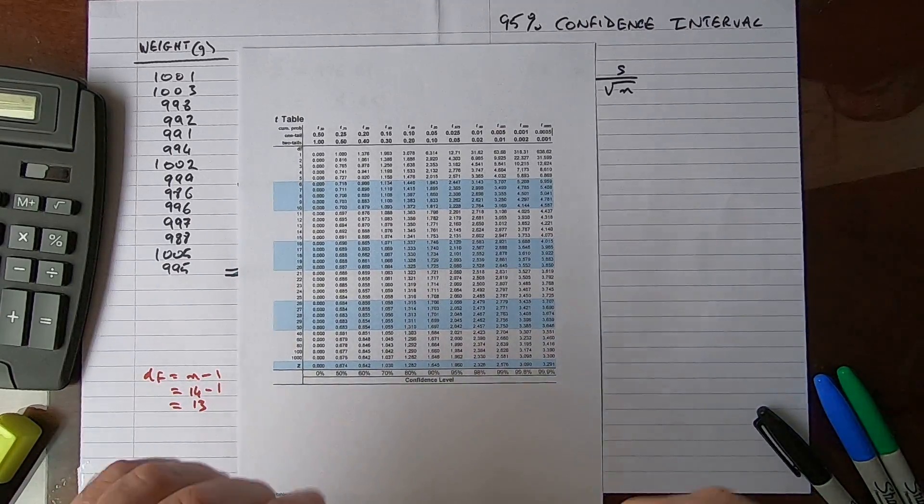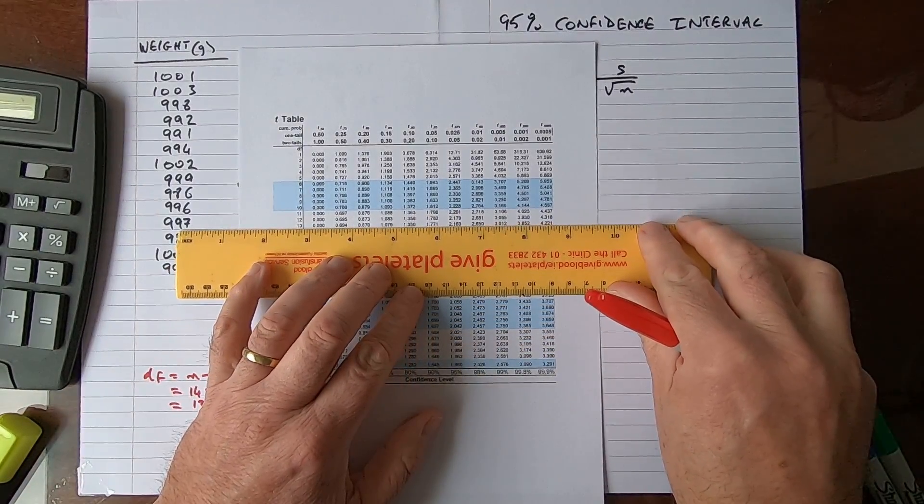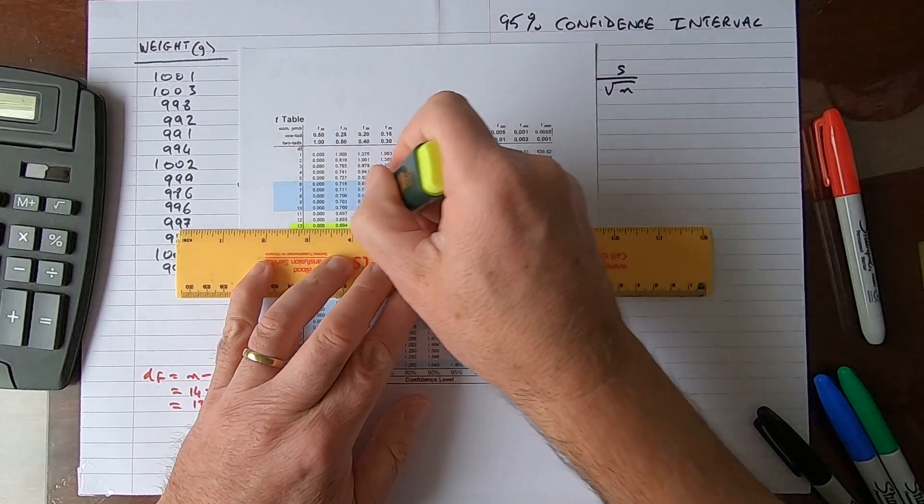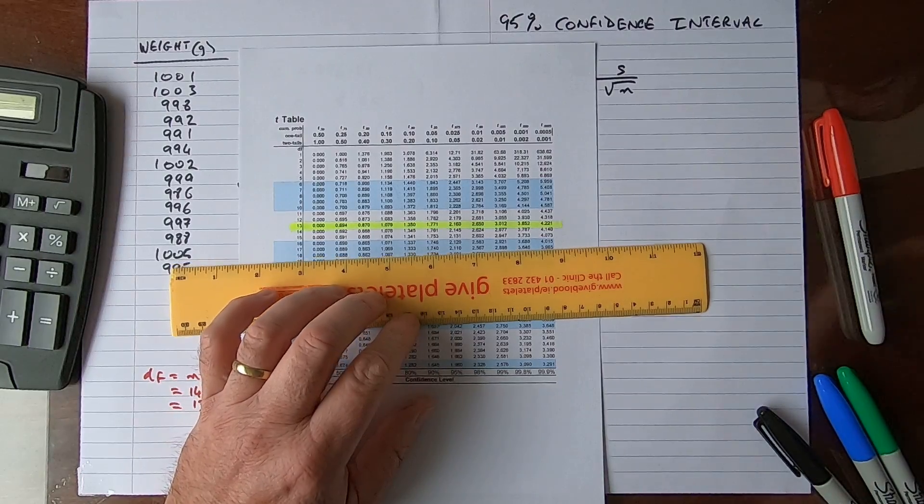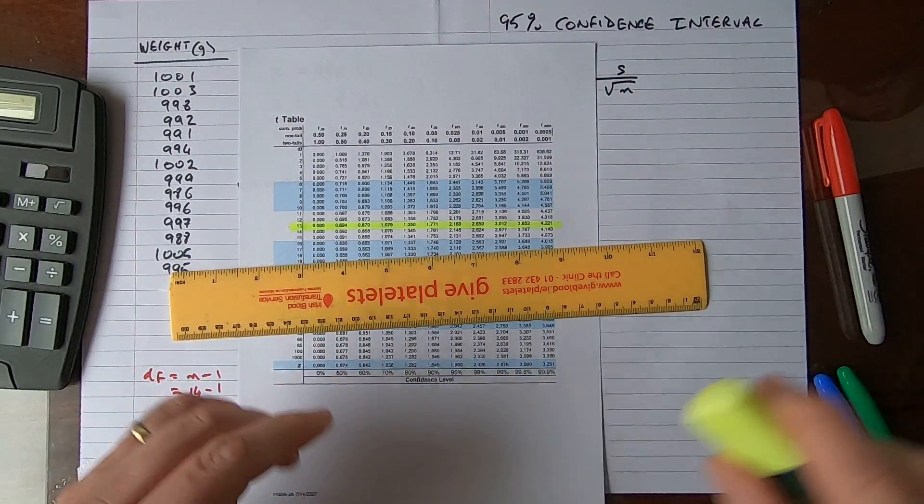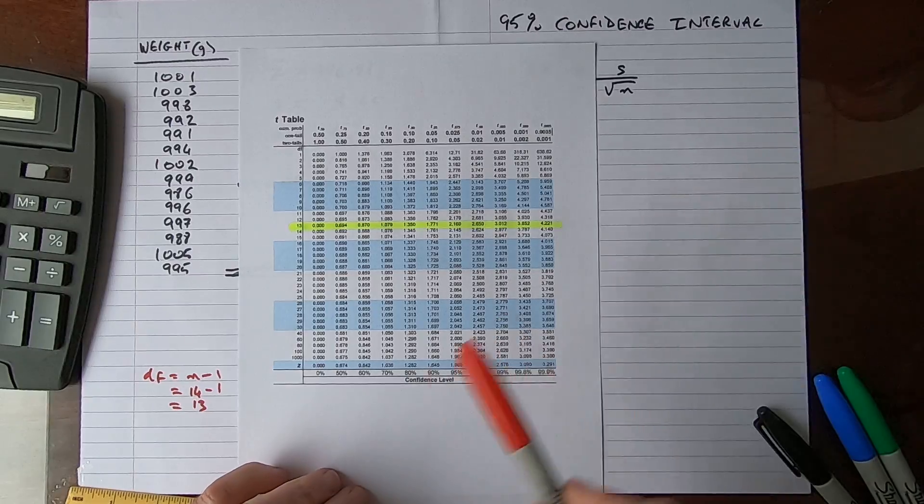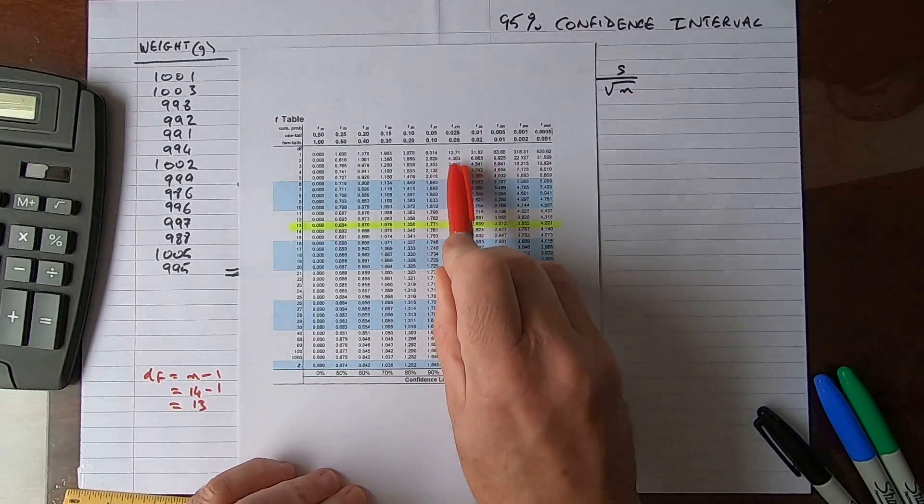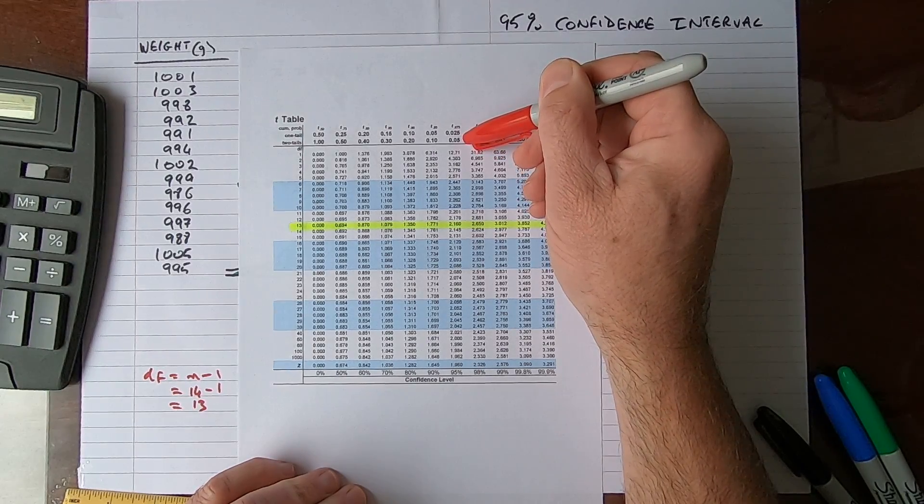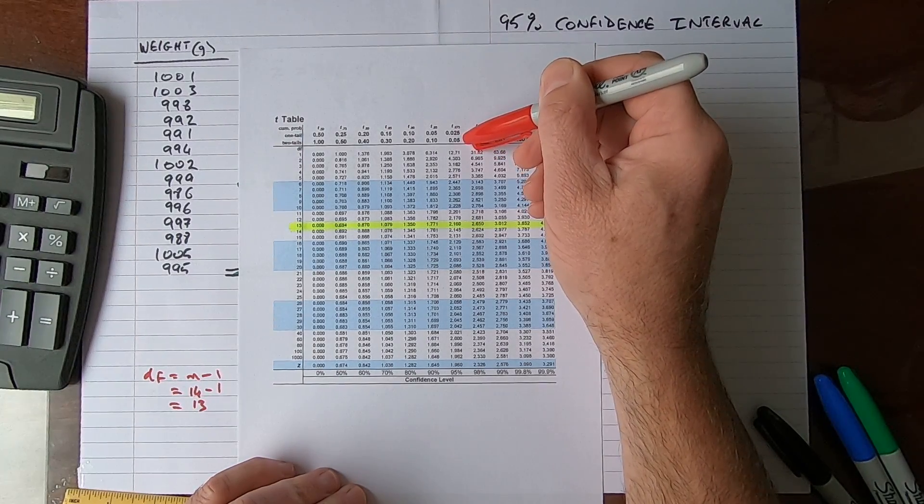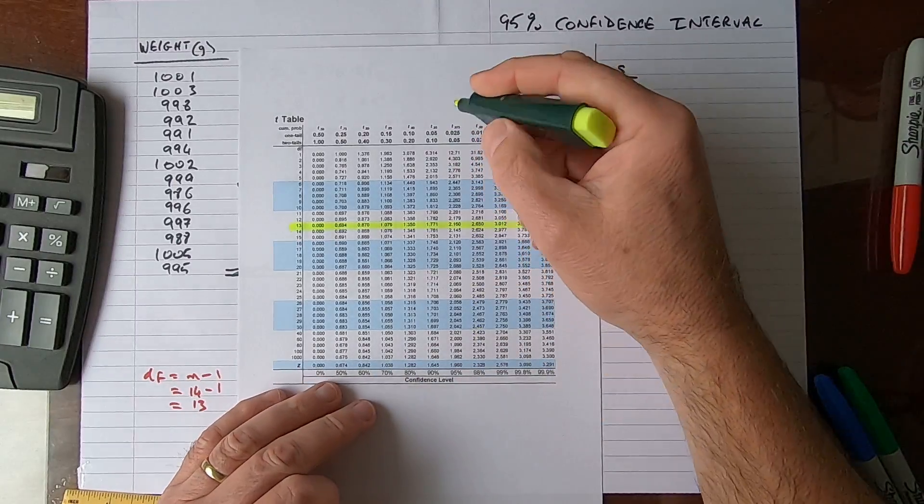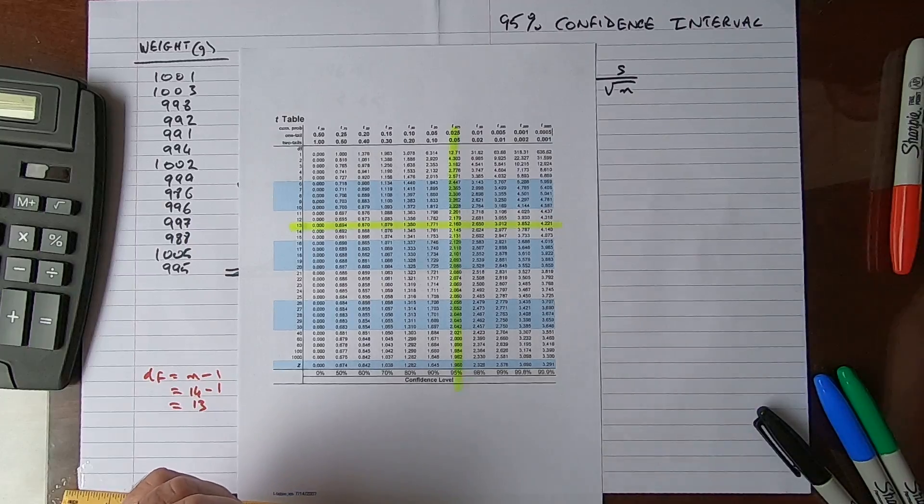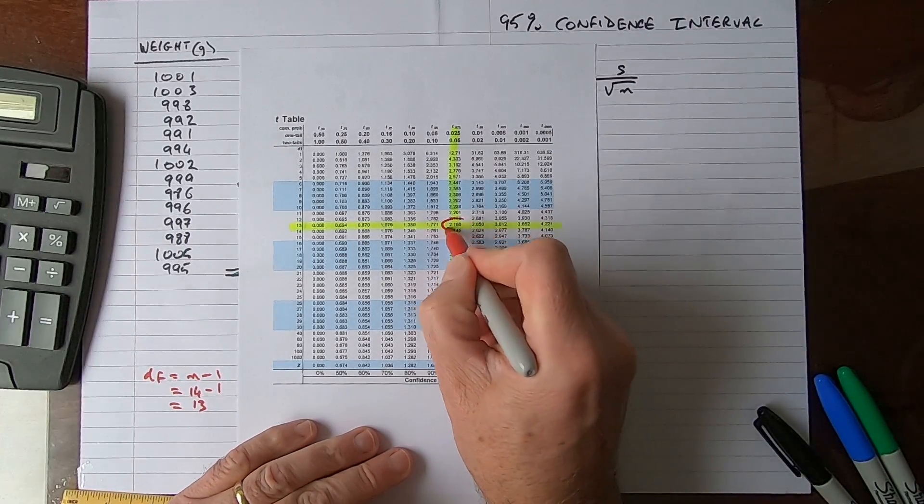On my row of 13, somewhere on this row is my t value. How do I select the column? I can look at the bottom and see 95% in this column, or at the top choose two tails with a value of 0.05. Where the two values cross over is the t value I'm going to need. We can see that is 2.160.